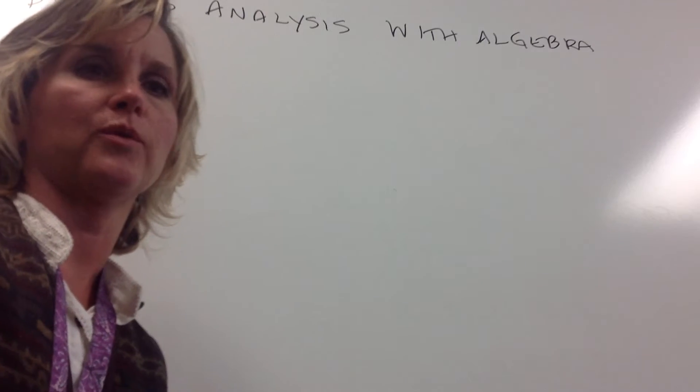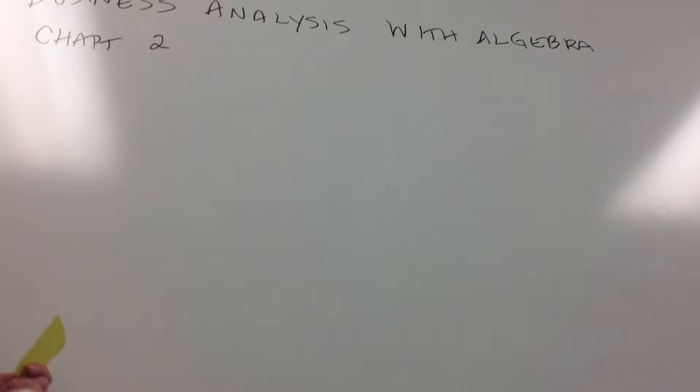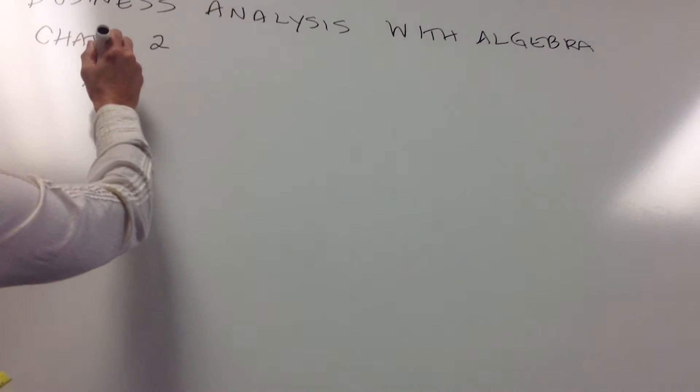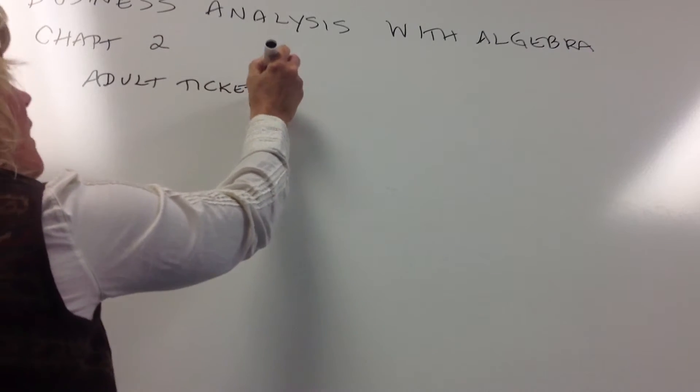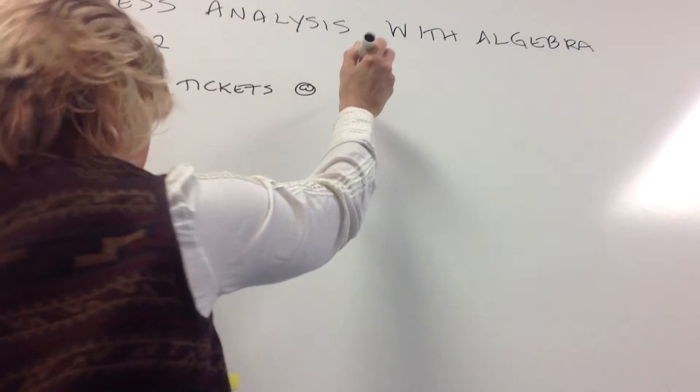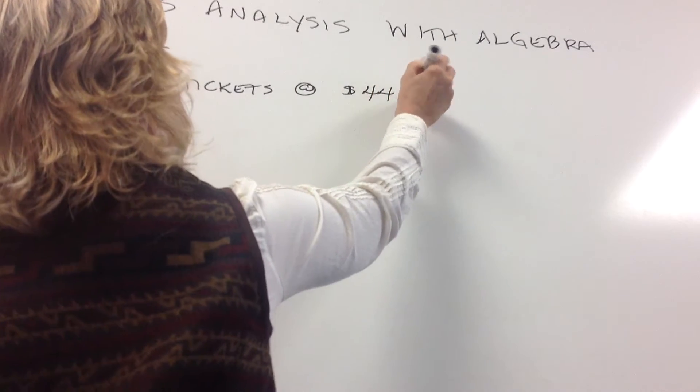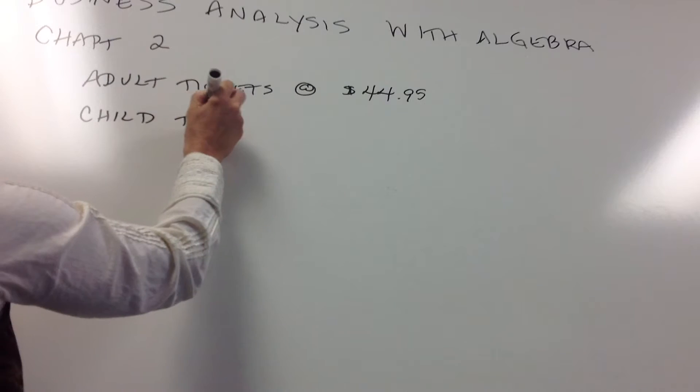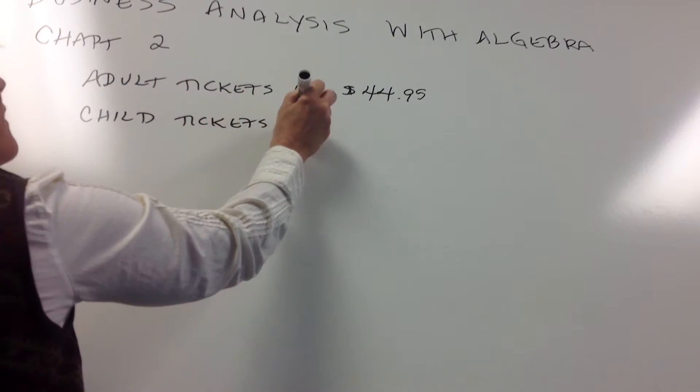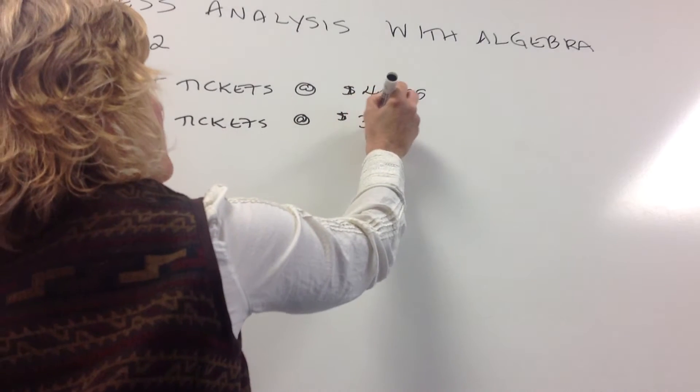If we have an amusement park where there are two different types of tickets that are sold, adult tickets, and those are sold for $44.95. And then if we have a child's ticket, and those are sold at a reduced price of $34.95.